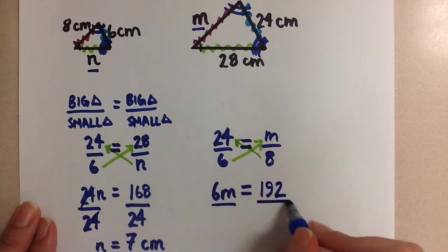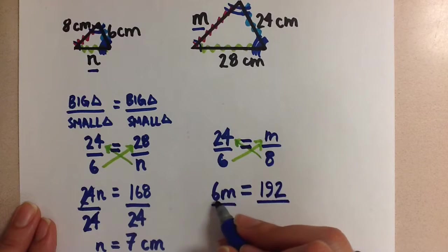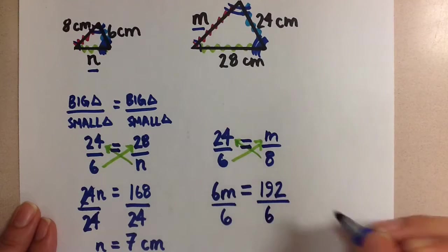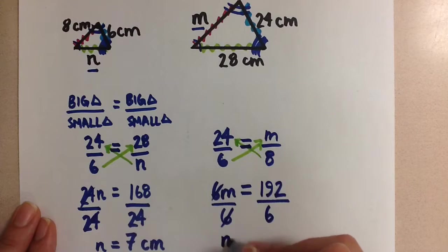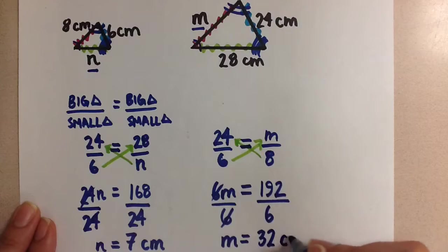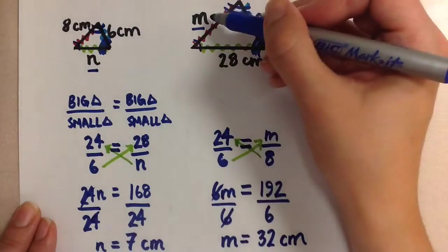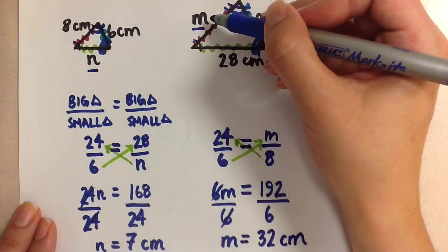Now we divide both sides by the coefficient of the variable. In this case, it's 6. These cancel, and we're left with m equals 32 centimeters. So the m here, the missing side, is 32 centimeters.